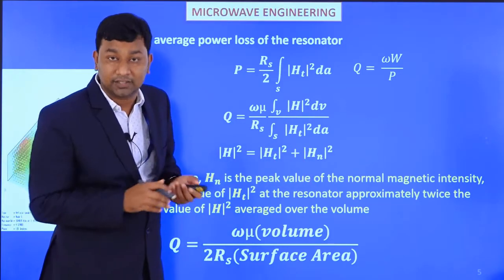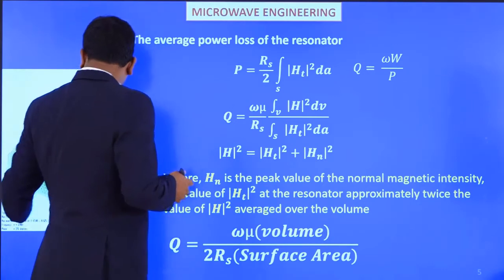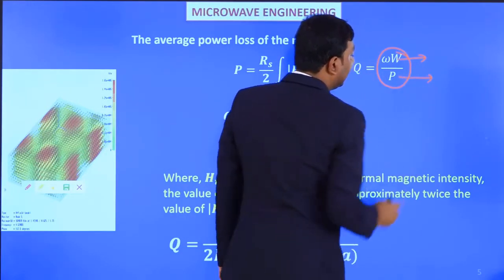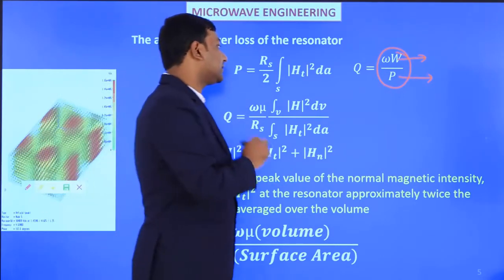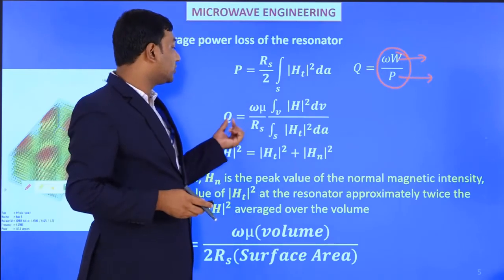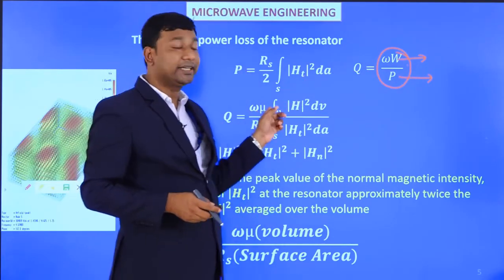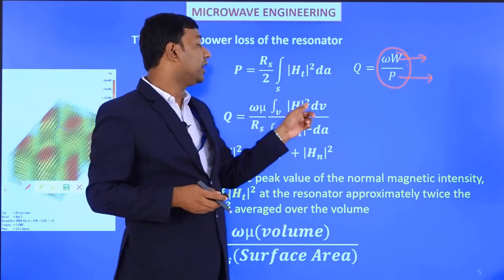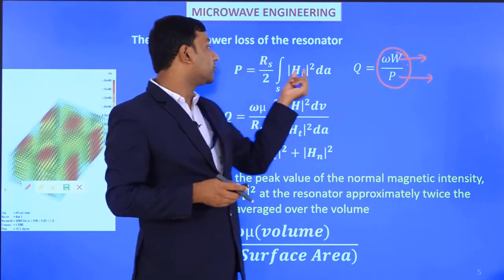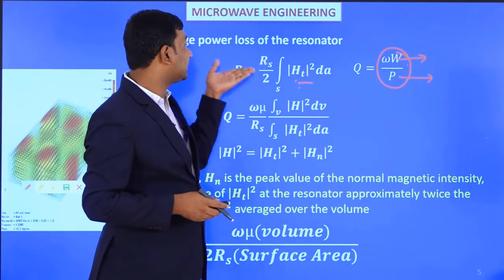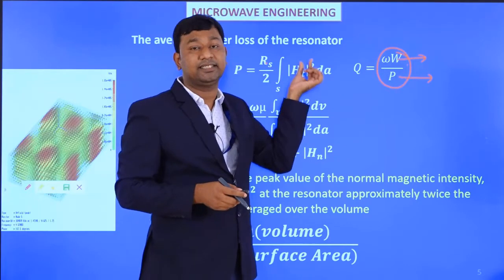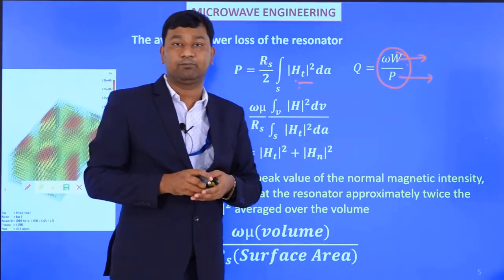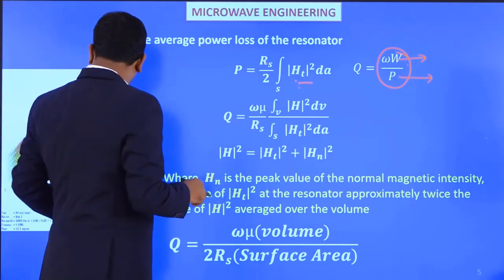So the quality factor is maximum energy stored divided by energy dissipated per second — Q = ωW/P, where W is the maximum energy stored and P is the average power loss. We can calculate W either in terms of magnetic field as (μ/2)∫H² dV, or in terms of electric field as (ε/2)∫E² dV. The power loss is always expressed in magnetic terms for rectangular or circular cavity resonators because losses occur at the surface resistance where only the tangential magnetic field is present.